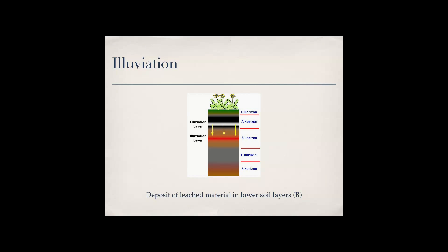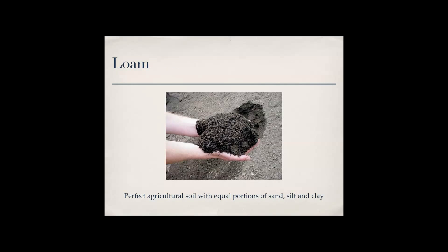So loam is the perfect agricultural soil with equal portions of sand, silt, and clay. If you remember the soil triangle you'll recall that sometimes it can be too sandy, too permeable, or too much clay, which means it'll suck up a whole bunch of stuff.